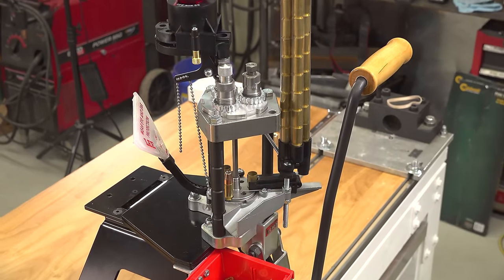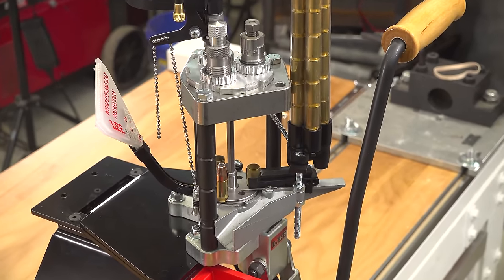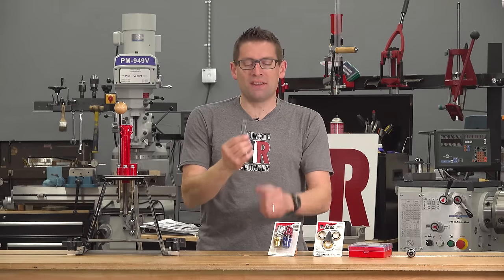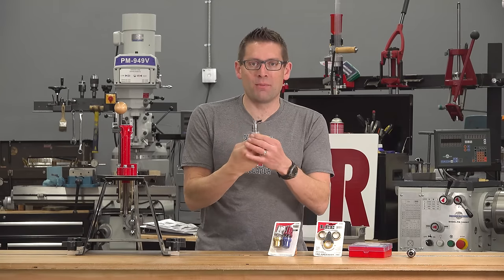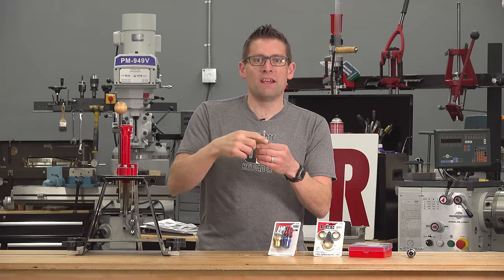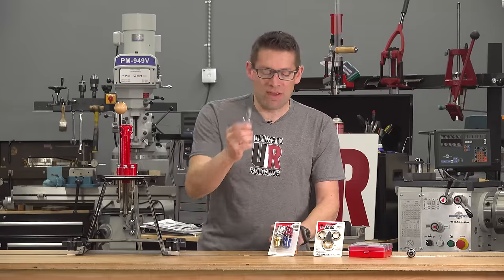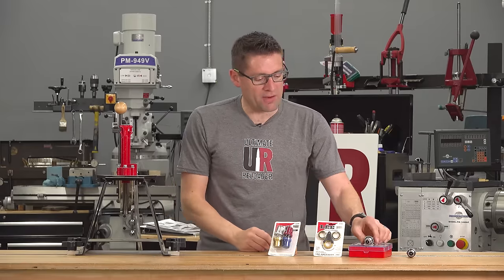Recently when I unboxed the Lee Pro 1000, you're going to want to check out that video, I noticed that now by default the die lock rings have splines on them. There's a cool little wrench that you can use to tighten the lock ring from almost any position. That's the new basic standard for Lee lock rings.